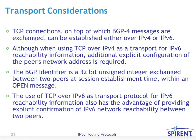Regarding transport considerations, as with IPv6 header structure modifications needed for upper layer protocols, BGP only uses TCP. TCP connections on which BGP messages are exchanged can be established over either IPv4 or IPv6. When using TCP over IPv4 as transport for IPv6 reachability information, additional explicit configuration of the peer's network address is required. The BGP identifier is a 32-bit unsigned integer exchanged between peers at session establishment in an open message. Using TCP over IPv6 as a transport protocol also provides explicit confirmation of IPv6 network reachability between two peers.